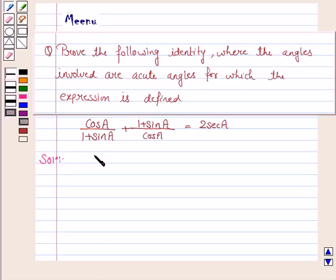Let's start with LHS. LHS is cos A upon 1 plus sin A plus 1 plus sin A upon cos A.